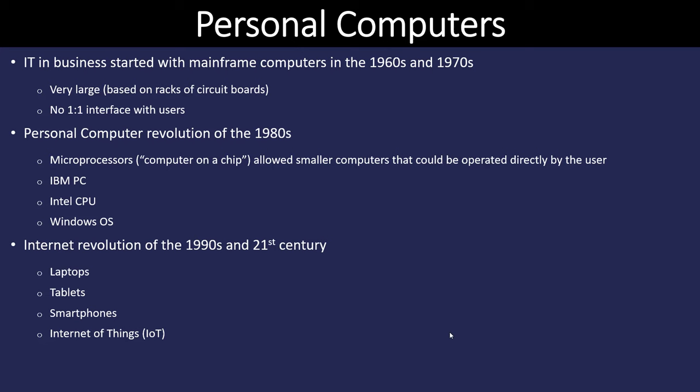IBM really started off with many of the first personal computers. Intel then began developing CPUs, and Microsoft came on board with Windows. Apple of course came on board with its Macs. Around the late 90s and turn of the century we got the internet, which changed a lot of things and made it possible for all our computers to talk to each other, giving rise to tablets and smartphones, and now the internet of things.